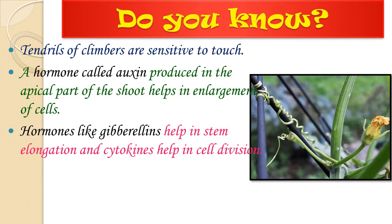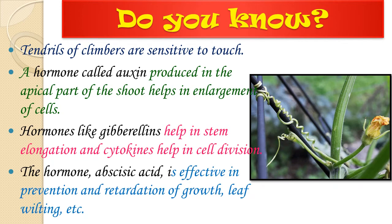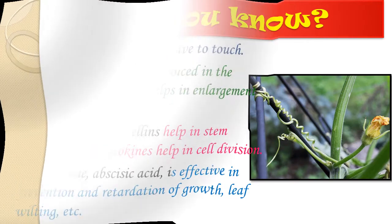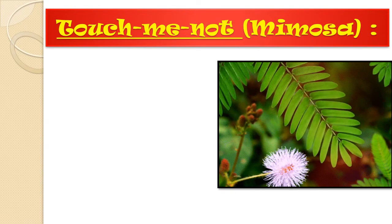The hormone abscisic acid is effective in the prevention and retardation of growth and leaf wilting. Leaf wilting means the bending of the leaf in a downward direction, making it very weak — this is due to insufficient water, overwatering, or too much direct sunlight. Due to this, the leaf becomes wilted and eventually falls off.